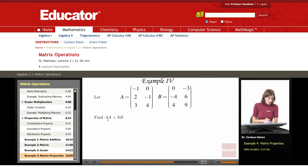Example 4 is slightly more complicated. We're asked to find negative 3A plus 6B.